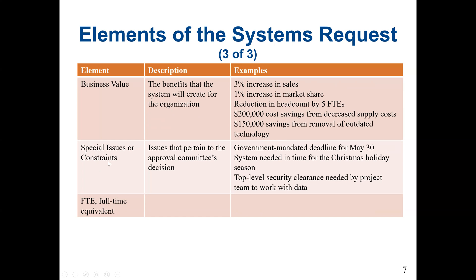The fifth element is special issues or constraints — issues pertaining to business operations. For example, issues that pertain to an approver committee decision, or a government-mandated deadline such as May 30. A good example would be electronic medical records: the government issued a bill requiring clinics and hospitals, both public and private, to digitize their patients' records by a specific deadline. Another example is a system needed in time for the Christmas holiday season due to increased business activity, or top-level security clearance needed by the project team to work with data.